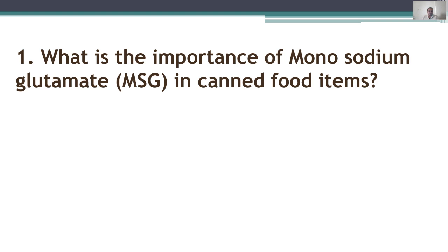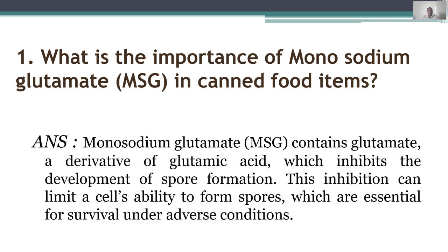First question: what is the importance of monosodium glutamate (MSG) in canned food items? MSG contains glutamate, a derivative of glutamic acid. Glutamate inhibits the development of spores, or inhibits spore formation. This inhibition can limit a cell's ability to form spores, which are essential for survival under adverse conditions. So MSG is used in canned food to inhibit the growth of spores.